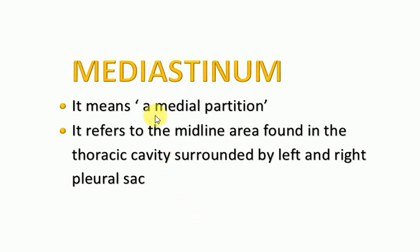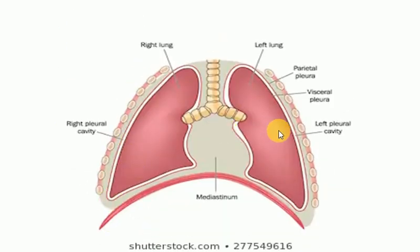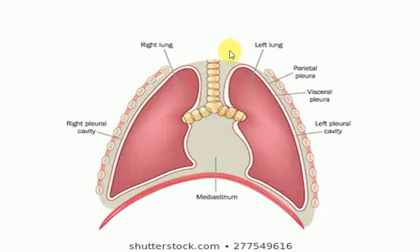Hi students, today's topic is mediastinum. It means medial partition. It refers to the midline area found in the thoracic cavity surrounded by left and right pleural sac. These are the right and left lungs covered by parietal and visceral pleura. This is the diaphragm, and the midline cavity in between the pleural sac is the mediastinum, which is in continuity with the loose connective tissue of the neck. This mediastinum contains almost all the vital structures of the thorax except the lungs.